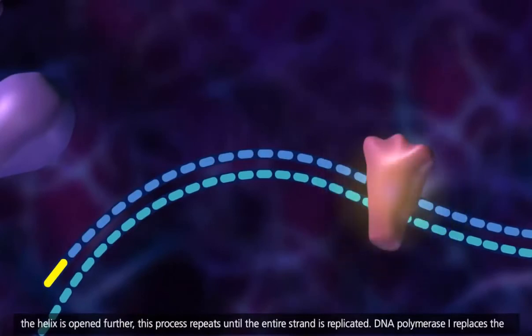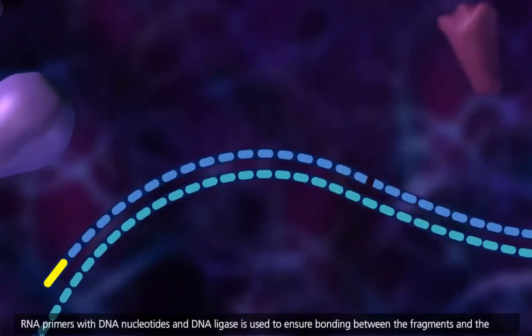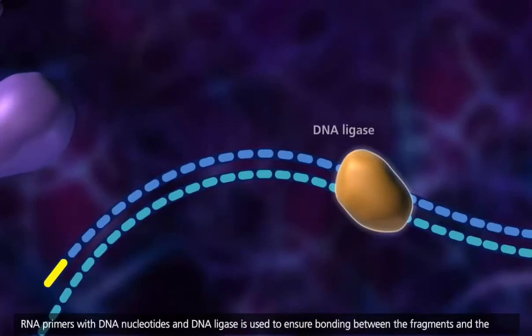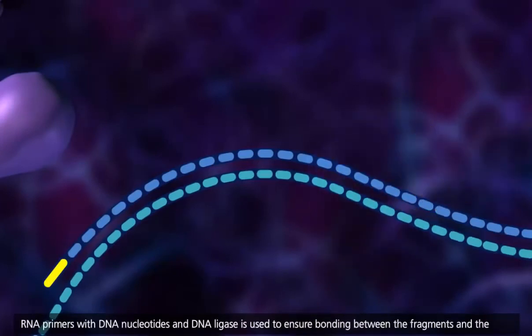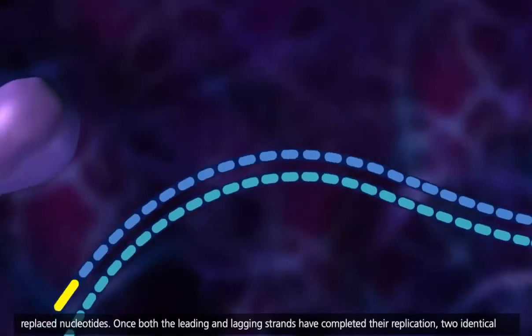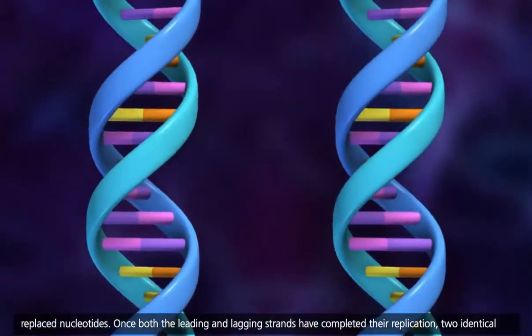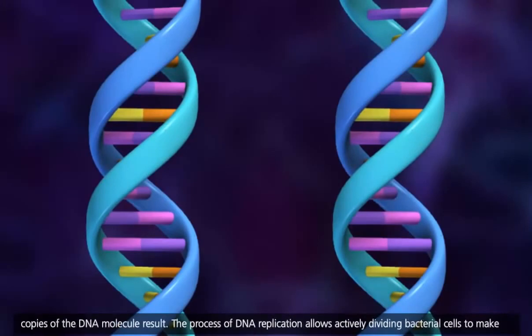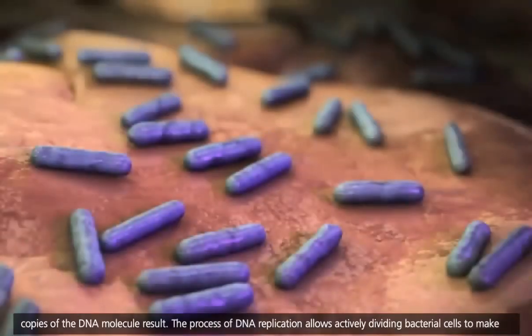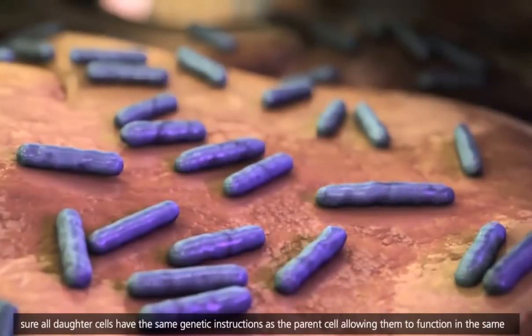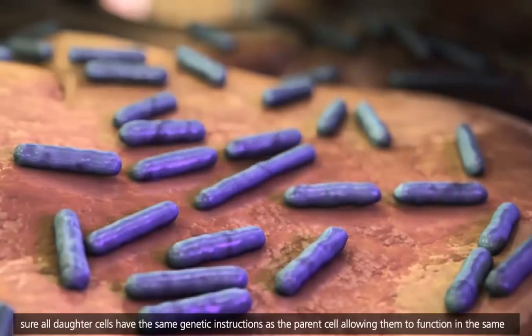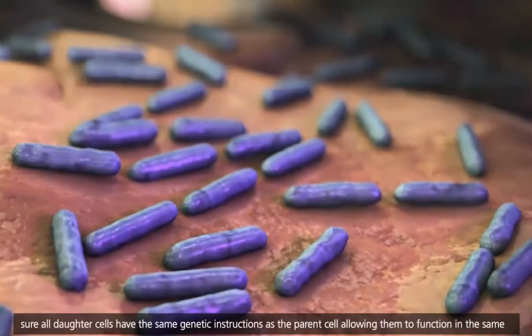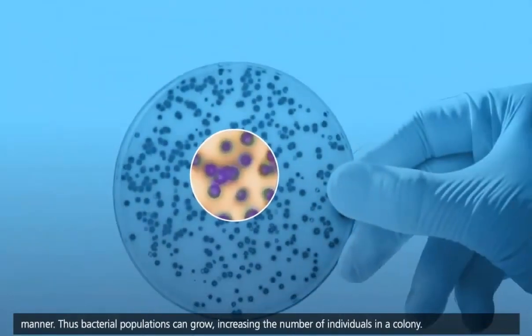DNA polymerase 1 replaces the RNA primers with DNA nucleotides, and DNA ligase is used to ensure bonding between the fragments and the replaced nucleotides. Once both the leading and lagging strands have completed their replication, two identical copies of the DNA molecule result. The process of DNA replication allows actively dividing bacterial cells to make sure all daughter cells have the same genetic instructions as the parent cell, allowing them to function in the same manner.